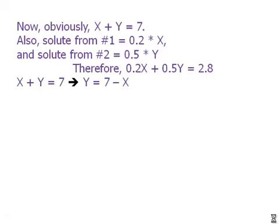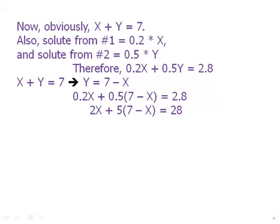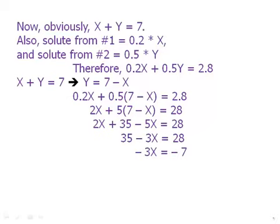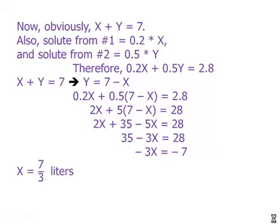So in that first equation, what I'm going to do, I'm just going to solve it for Y. The reason I'm going to solve it for Y is that when I substitute, that will eliminate Y, and it will leave me with an equation for X, which is what I want. So I'm going to plug this into the second equation, substitute it in. I'm going to multiply everything by 10, just so I don't have to deal with decimals. I'm going to distribute, collect the terms, simplify a bit, subtract 35 from both sides. We get negative 3X equals negative 7, divide by negative 3. We get X equals 7 thirds liters. And that's the answer to the question.